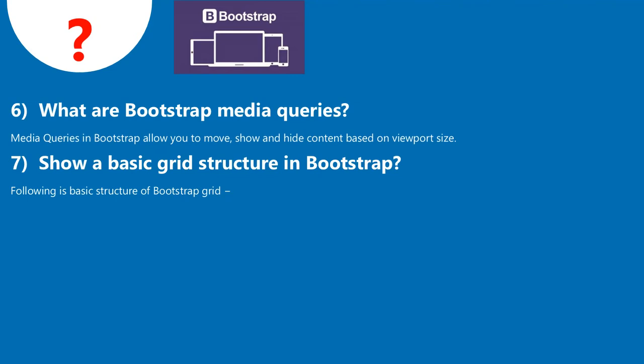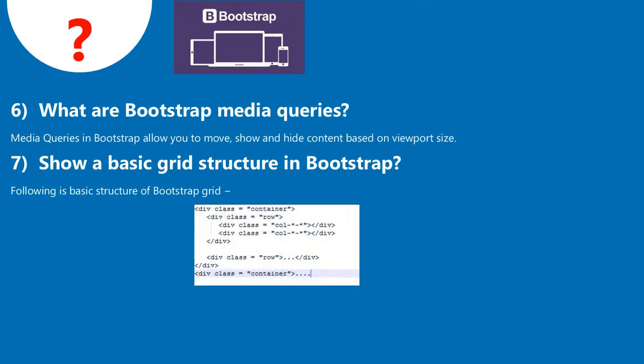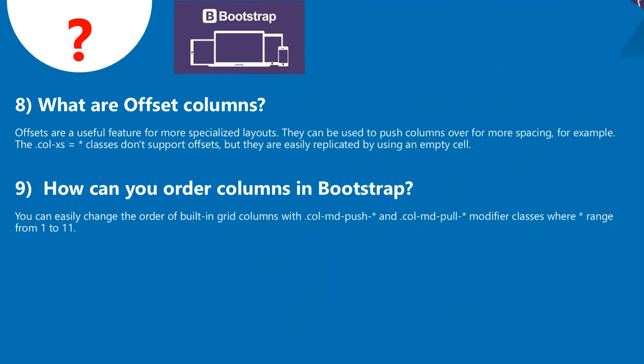Question 7: Show a basic grid structure in Bootstrap. The following is a basic structure of the Bootstrap grid. Question 8: What are offset columns? Offsets are a useful feature for more specialized layouts. They can be used to push columns over for more spacing. For example, the .col-xs-* classes don't support offsets but they are easily replicated by using an empty cell. Question 9: How can you order columns in Bootstrap? You can easily change the order of built-in grid columns with .col-md-push-* and .col-md-pull-* modifier classes, where * ranges from 1 to 11.